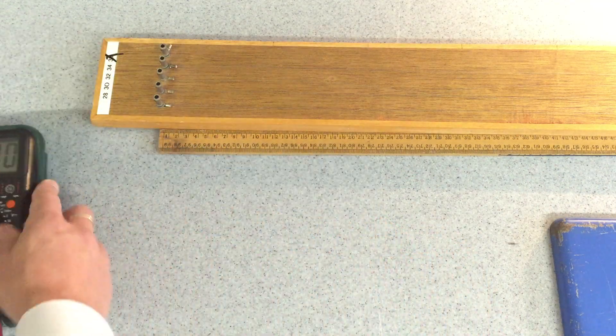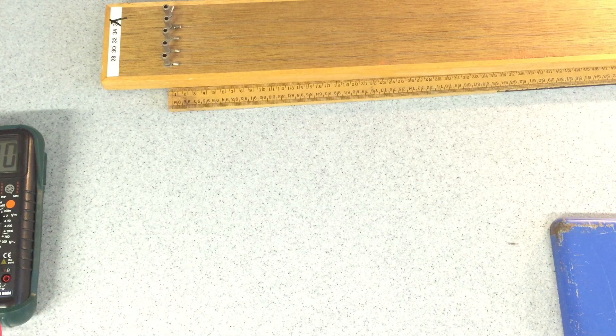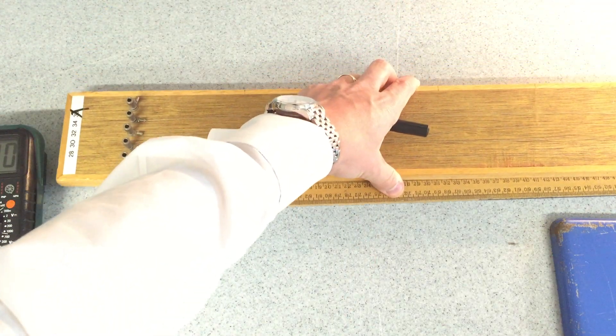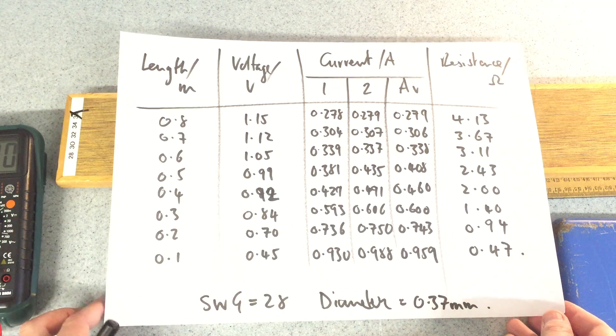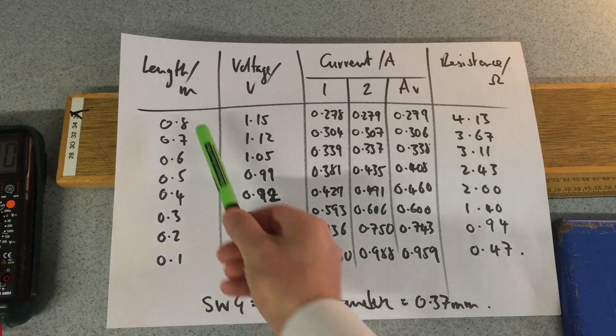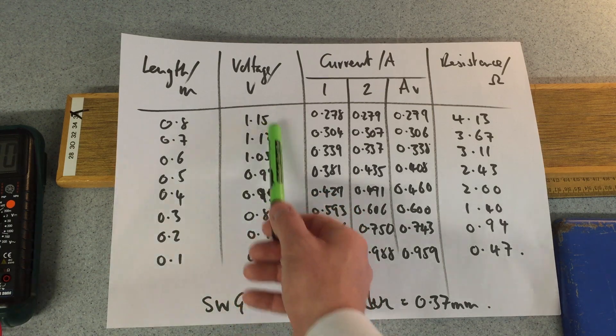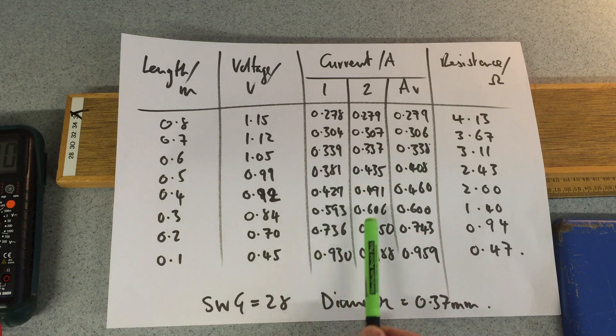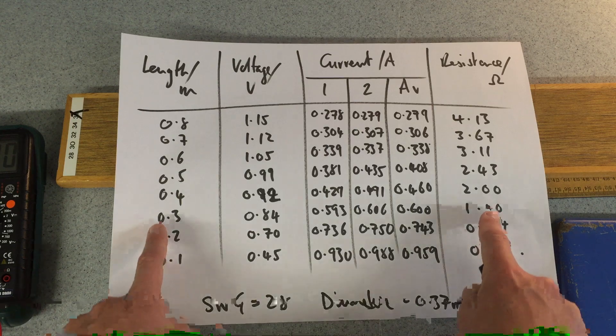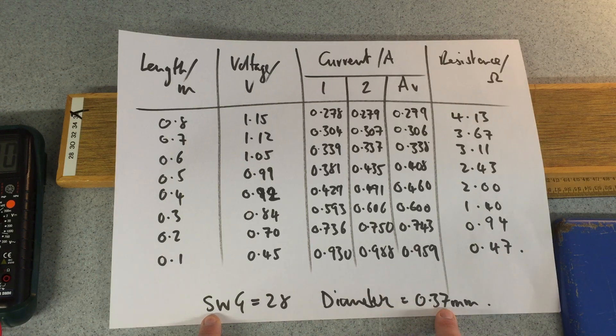Let me move that to one side and show you some of the results. There are the results for the length versus resistance. So I went from the longer length to the short length. The voltages didn't change much, they weren't fluctuating much. The currents were, hence I took the repeats and an average, and then I worked out the resistance. You can see here, as the length increases, so does the resistance increase. SWG was 28, which meant a diameter of 0.37.